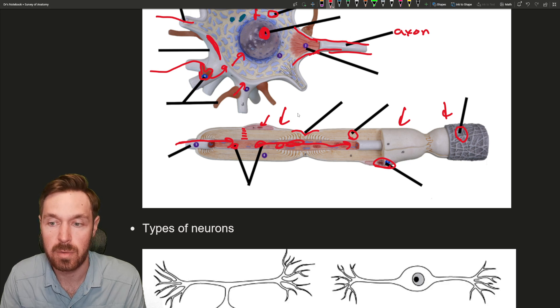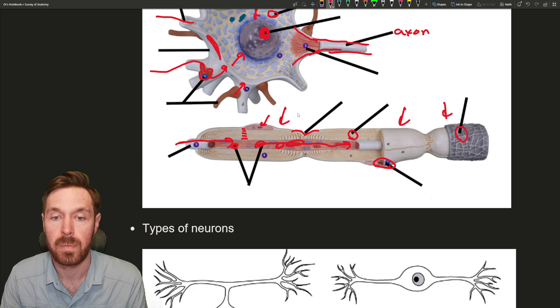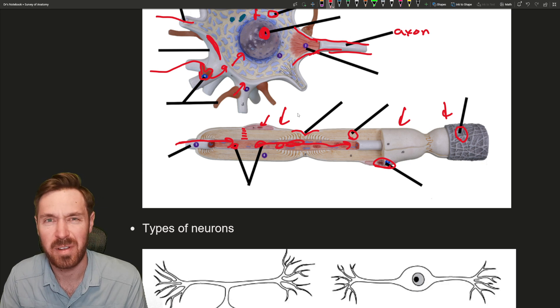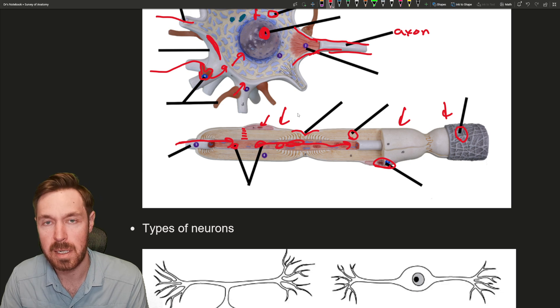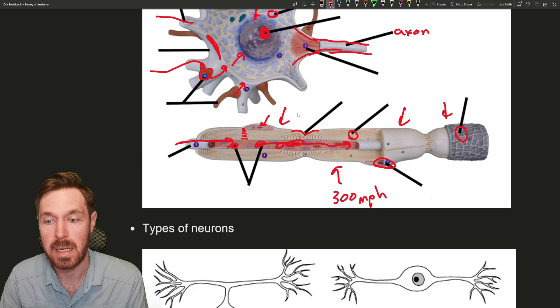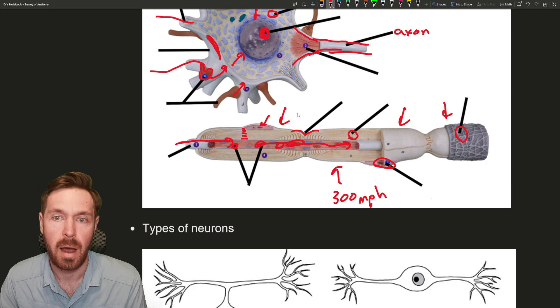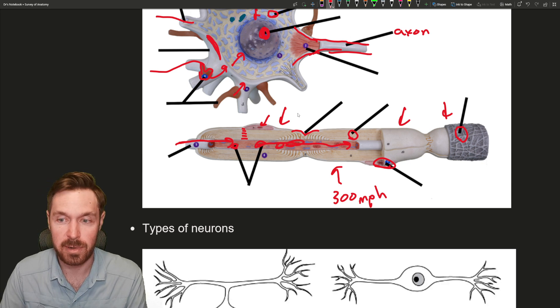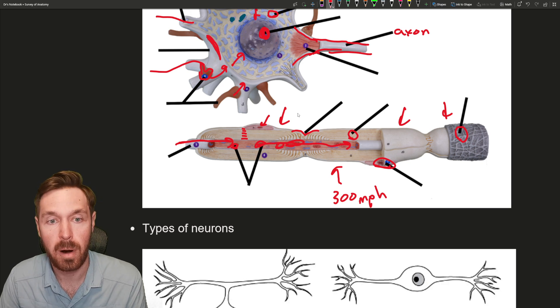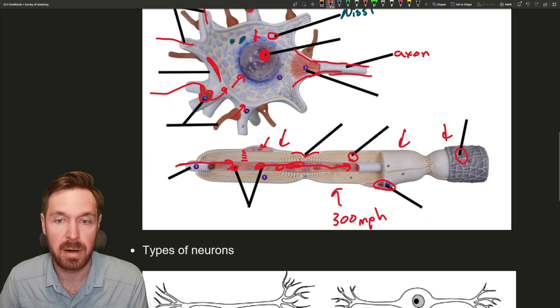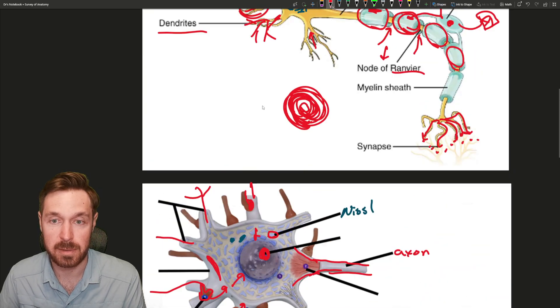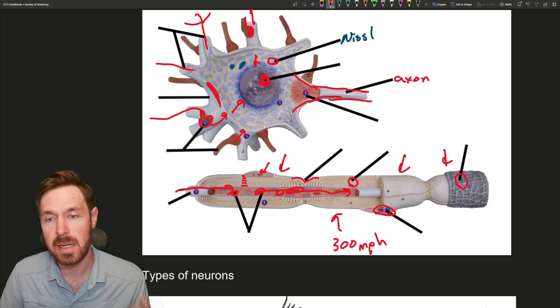Now, why is this myelination here? Well, it protects the axons and also increases the speed of conductance. So the more heavily myelinated an axon is, the faster it can send that signal. You have heavily myelinated, lightly myelinated, and non-myelinated fibers. These heavily myelinated fibers here can go like 300 miles per hour, and then non-myelinated ones go like three miles an hour, which is still pretty fast considering this is happening inside your body. This degree of myelination plays a big part here. That was that difference between gray matter and white matter if you recall.